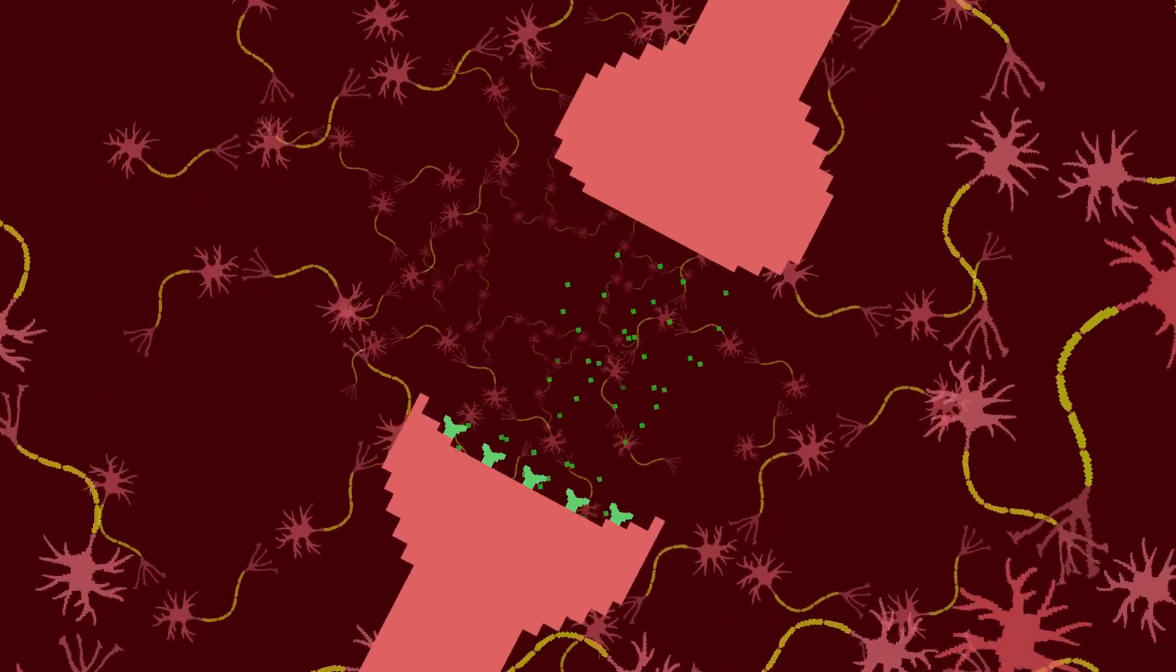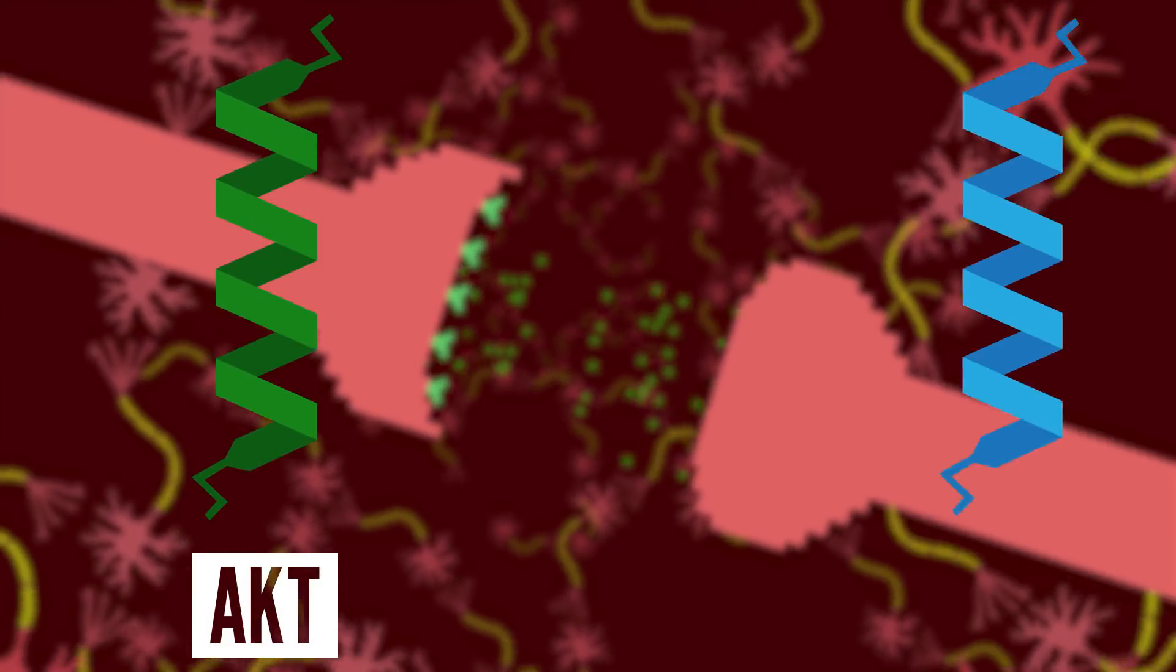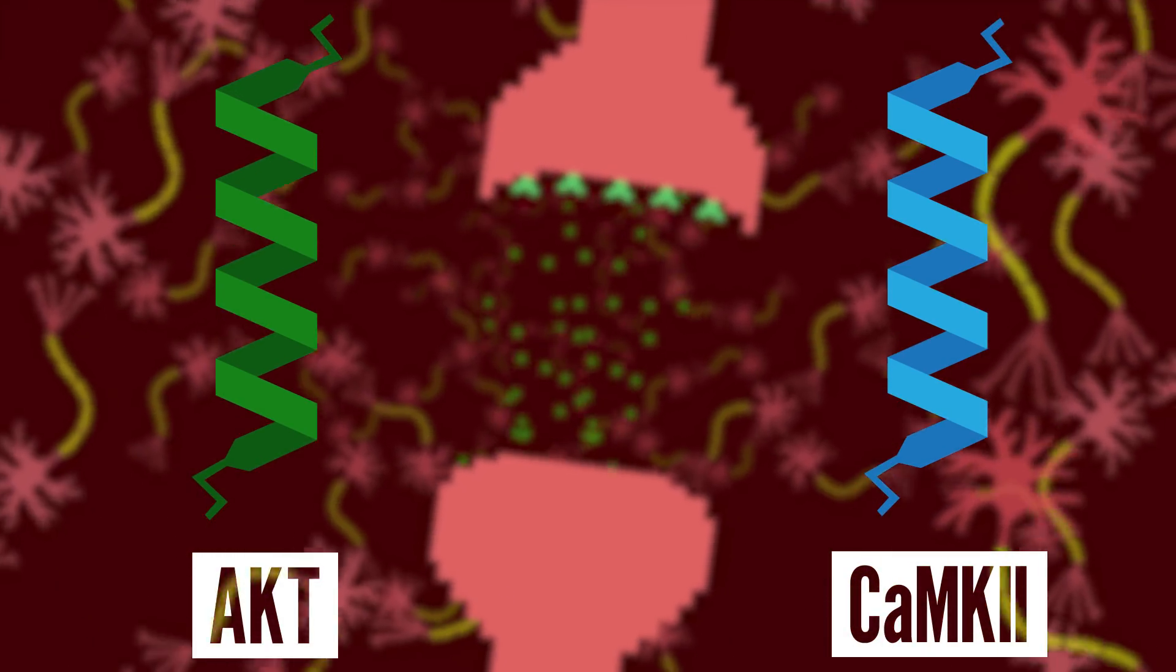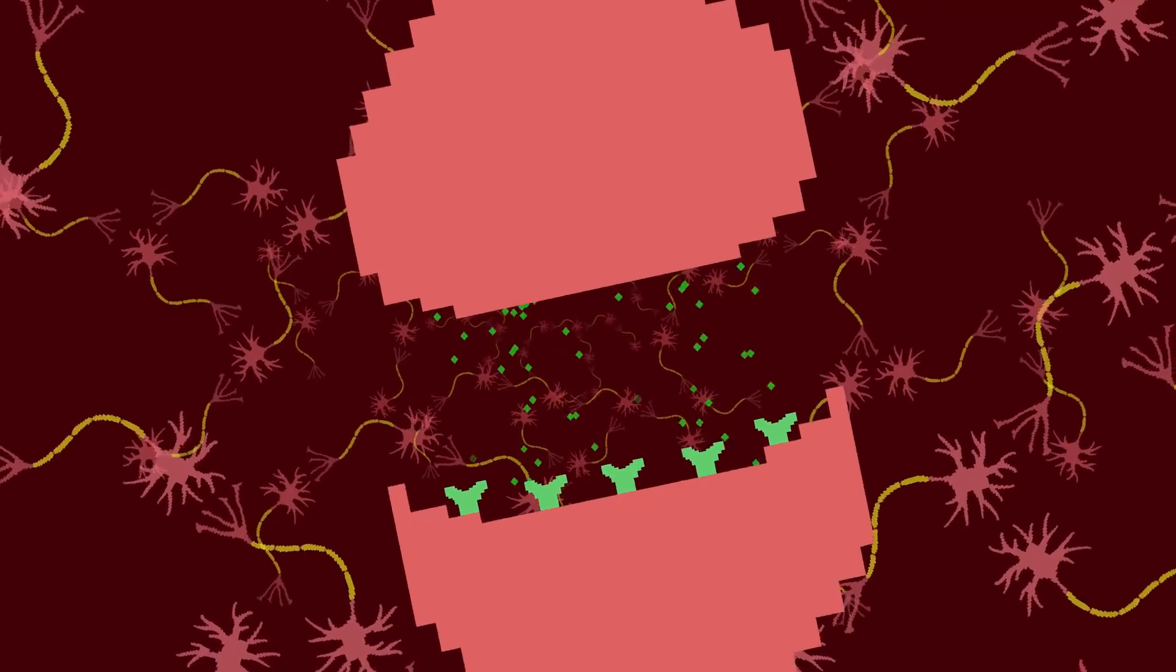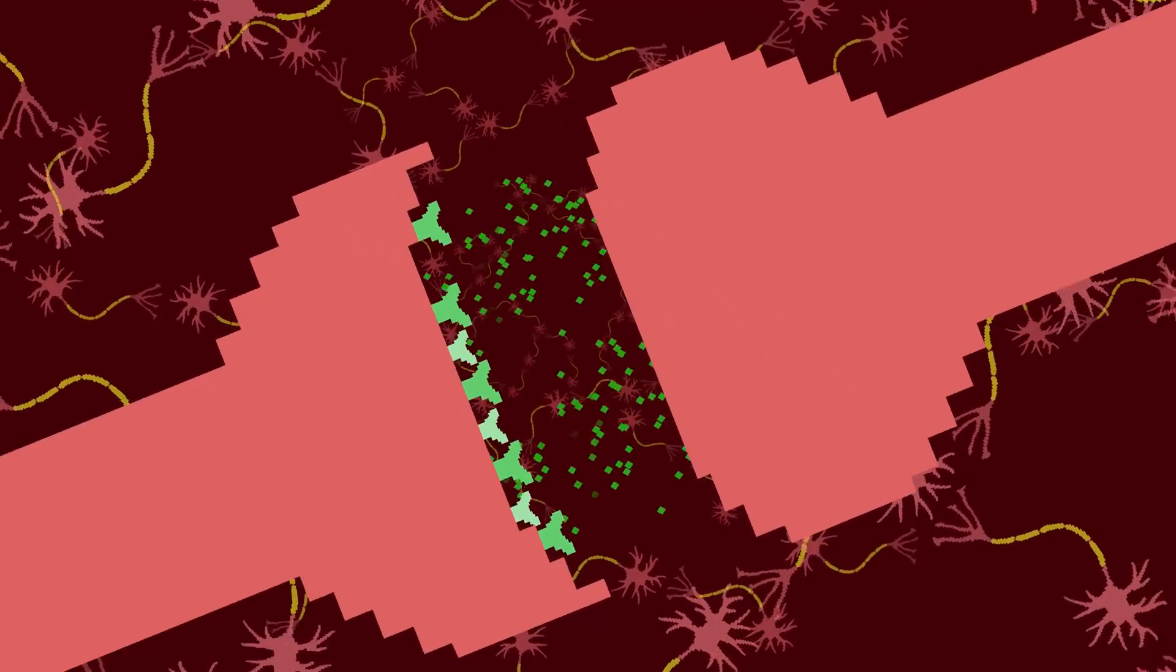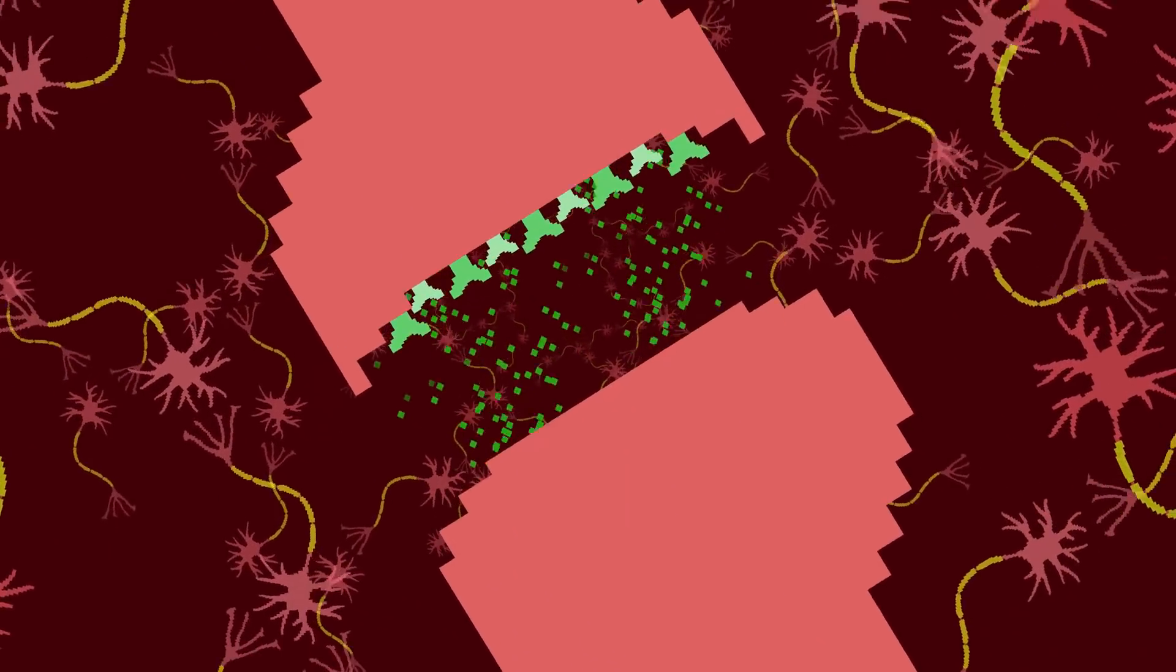A memory is formed when certain proteins like AKT and CAMK2 strengthen the synaptic connections. The formation of long-term memories takes time and occurs over stages, a process known as memory consolidation.